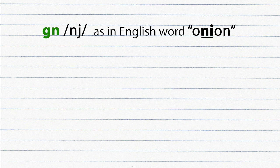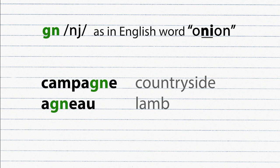GN is pronounced as N, as in English word onion. Campagne, agneau.